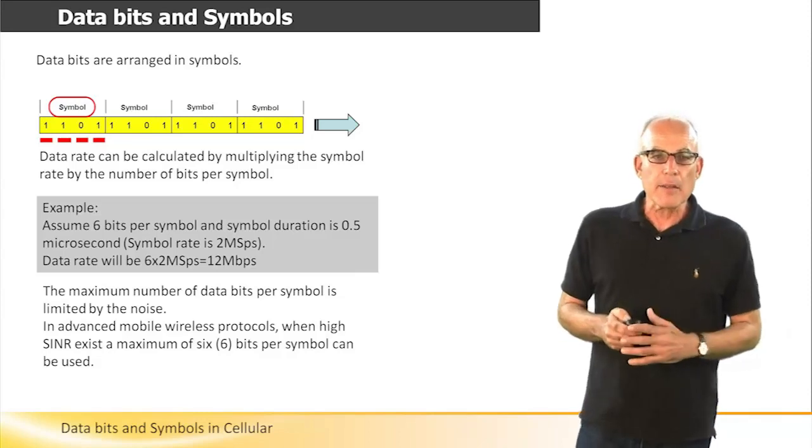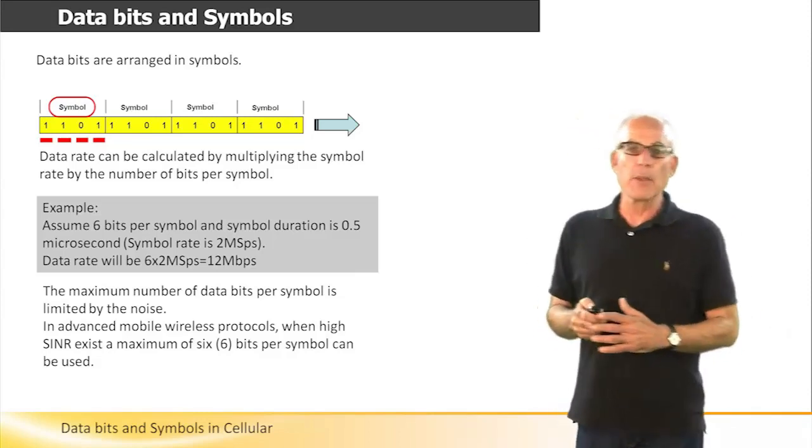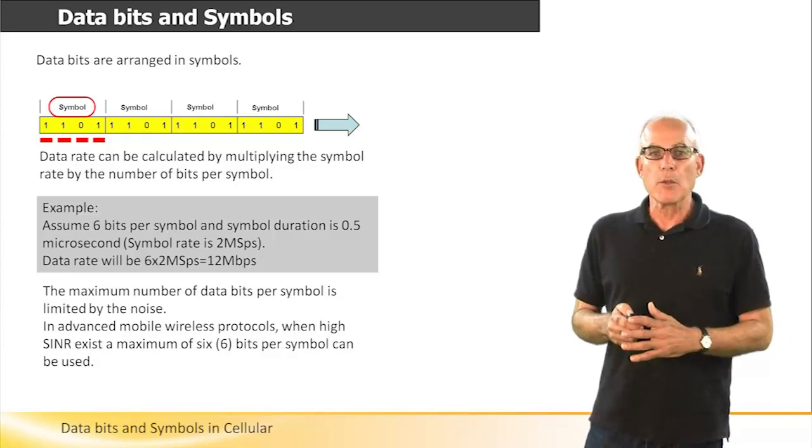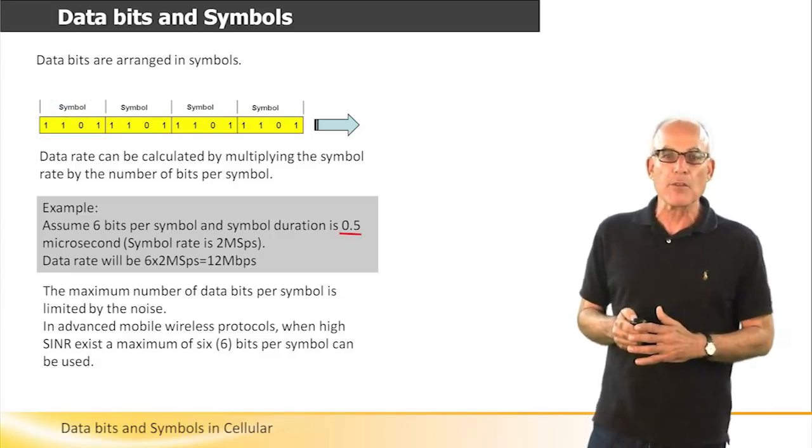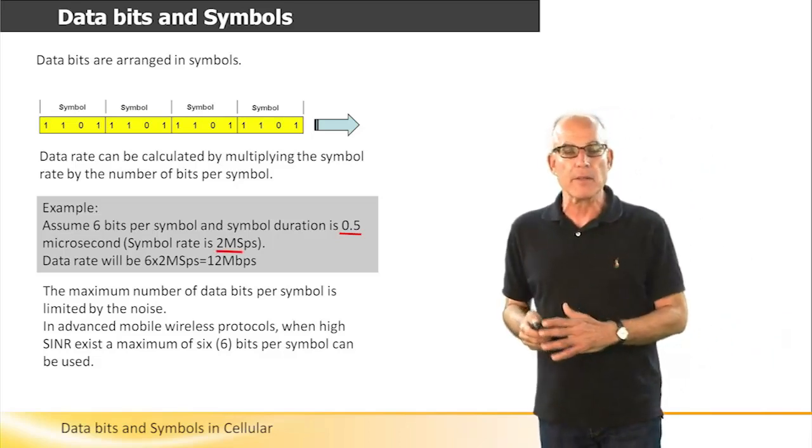Let's take an example. Assume we have symbols with a duration of 0.5 microseconds. This means the symbol rate is two mega samples per second.